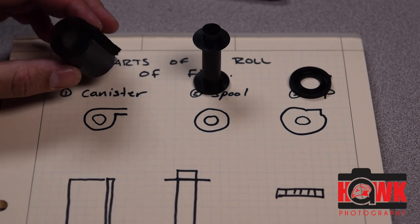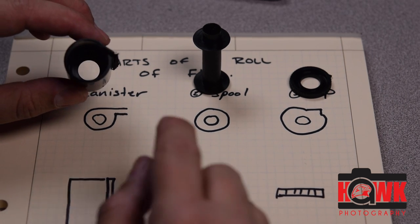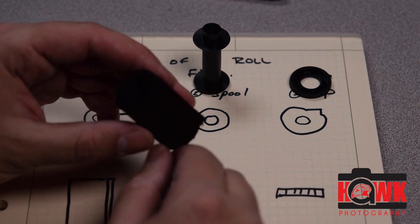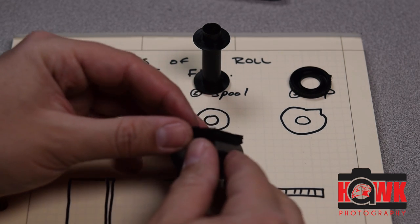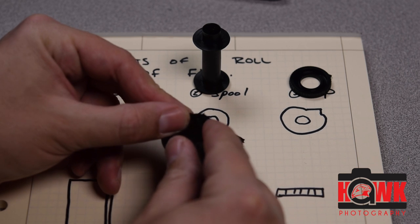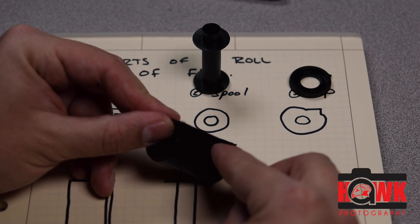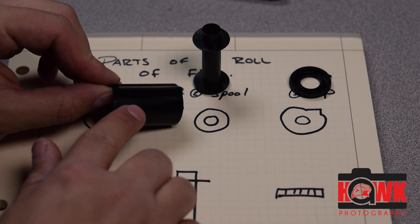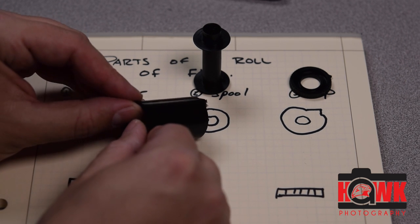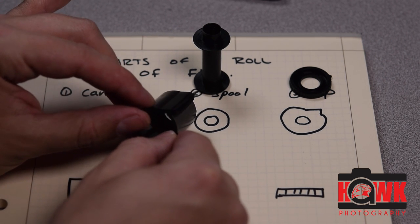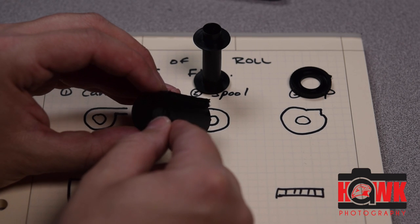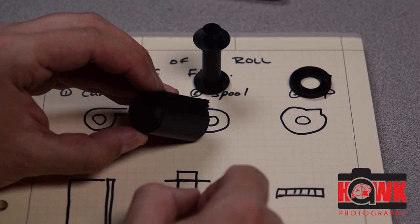The canister has two sides, a top and a bottom, and it also has these little felt strips here that allow the film to pass between them. Light cannot enter. Film can safely pass in and out of this canister.